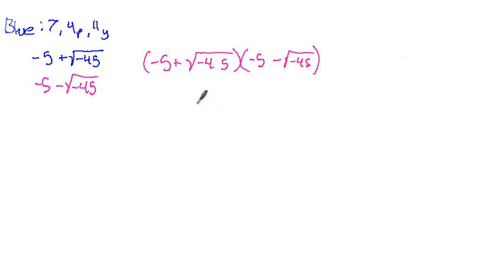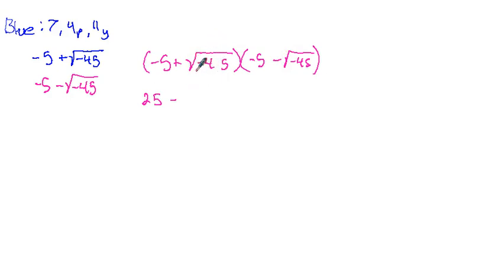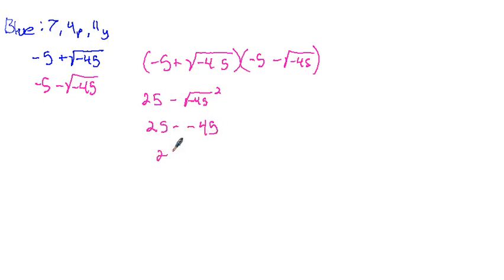Then it says to multiply these two numbers together. We'll do it a couple of different ways. First, without changing it to an imaginary number. We get negative 5 times negative 5, which is 25. Then negative 5 times negative root of negative 45, and negative 5 times positive root of negative 45 — those are identical things, so they cancel each other out. Then we have positive root of negative 45 times negative root of negative 45 — that gives us a negative times the square root of negative 45 squared. The square root and the square undo each other, so we have 25 minus negative 45, which is 25 plus 45, which is 70.